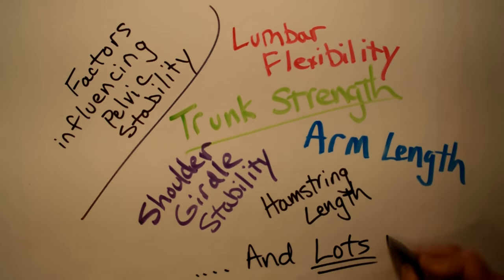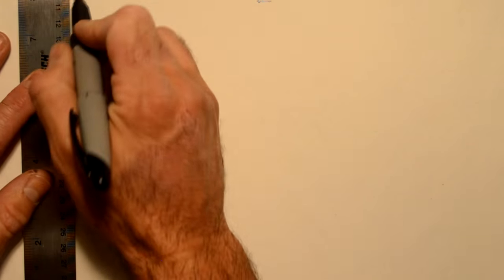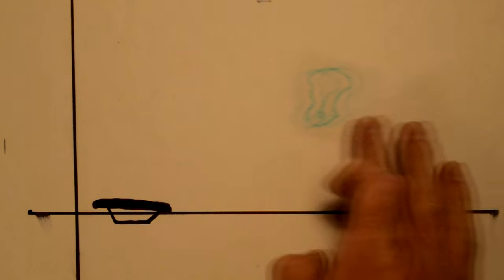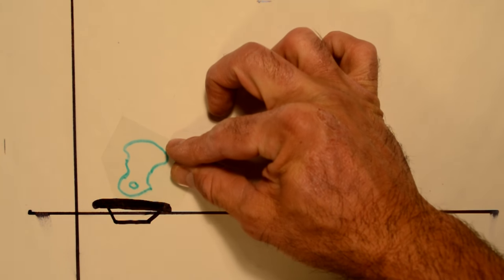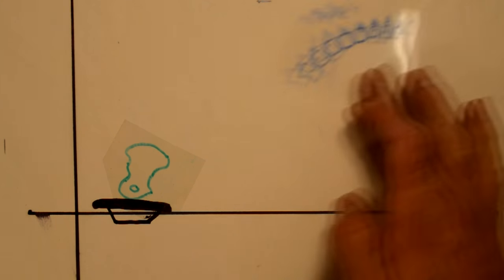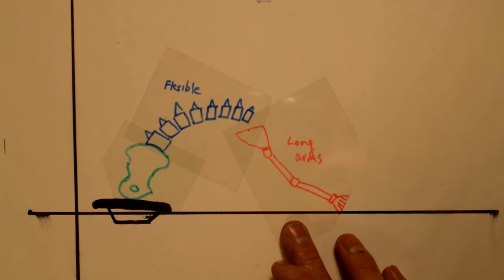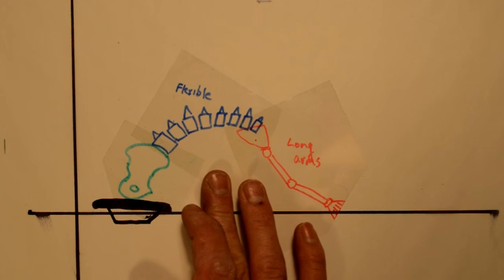But there are many other factors, like lumbar mobility, trunk strength, arm length, shoulder girdle stability, and hamstring length, among many others. So let's look at this from the ground up, or from the saddle up. Pelvis will rest on the saddle at a given angle. Factor in a flexible spine and long arms, and it will determine our handlebar position.